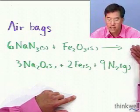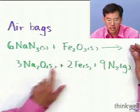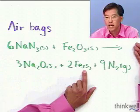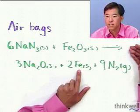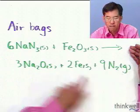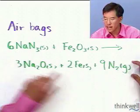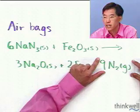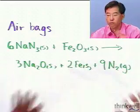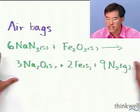When you get into an accident, the sodium azide and the ferric oxide react to form another solid, some iron metal. None of these are going to really add to the volume, but you get nine moles of nitrogen gas for every six moles of sodium azide you started with. It's this contribution — volume is proportional to number of moles — which causes the rapid expansion and deployment of the airbag when you get into an accident.